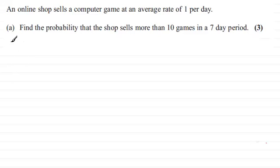Well the first thing we'd need to do is to define a random variable. So I'm going to say let X be that random variable. So let X be the random variable, we'll put RV for short, and it's going to represent the number of games sold in a period of seven days. So we'll say sold per seven days.